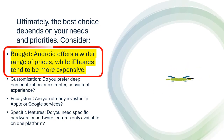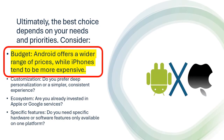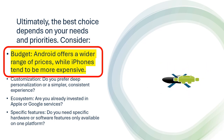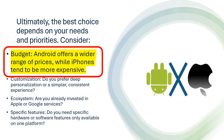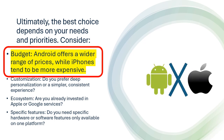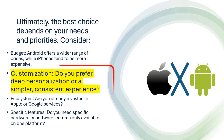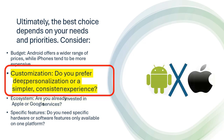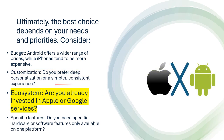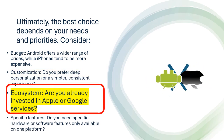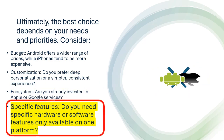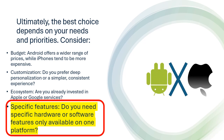Ultimately, the best choice depends on your needs and priorities. Consider: Budget — Android offers a wider range of prices, while iPhones tend to be more expensive. Customization — do you prefer deep personalization or a simpler, consistent experience? Ecosystem — are you already invested in Apple or Google services? Specific features — do you need specific hardware or software features only available on one platform?